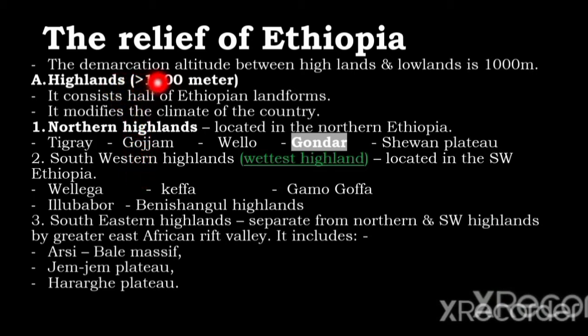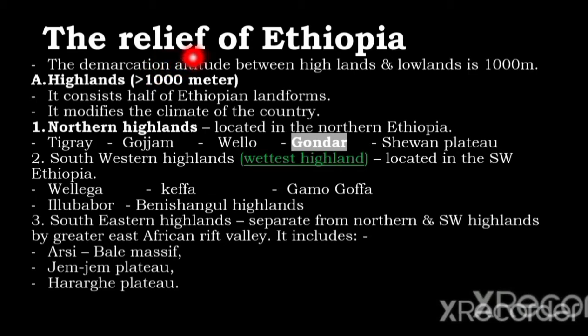The demarcation altitude between highland and lowland is one thousand meters. Relief is the arrangement of landscape or surface configuration.